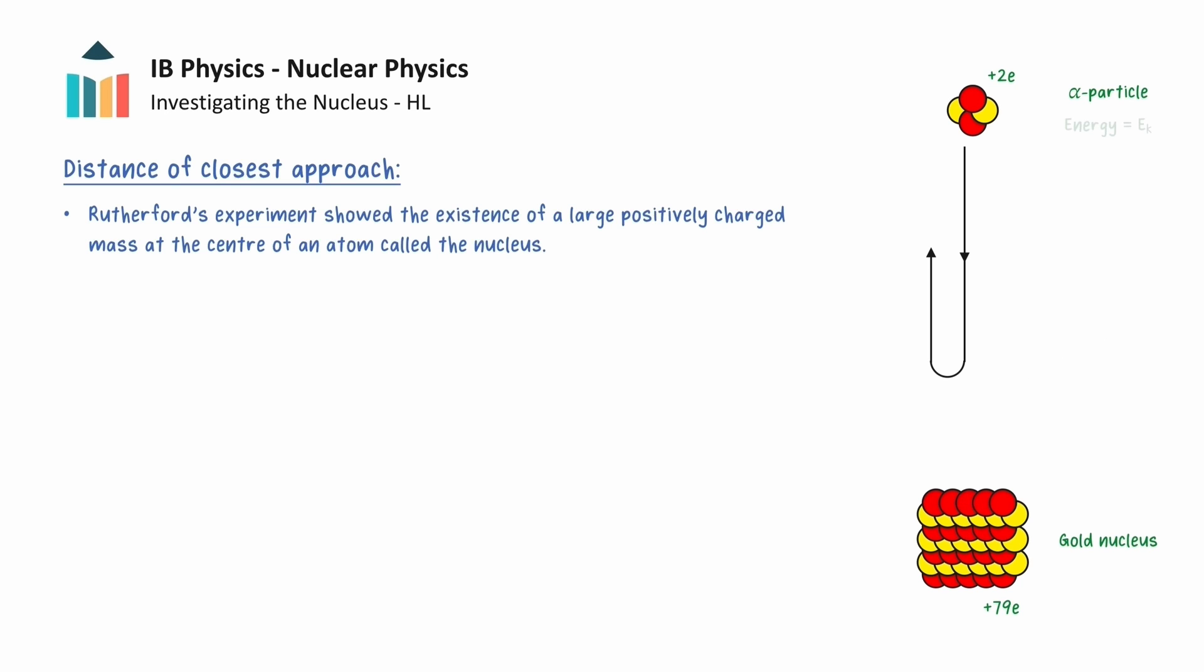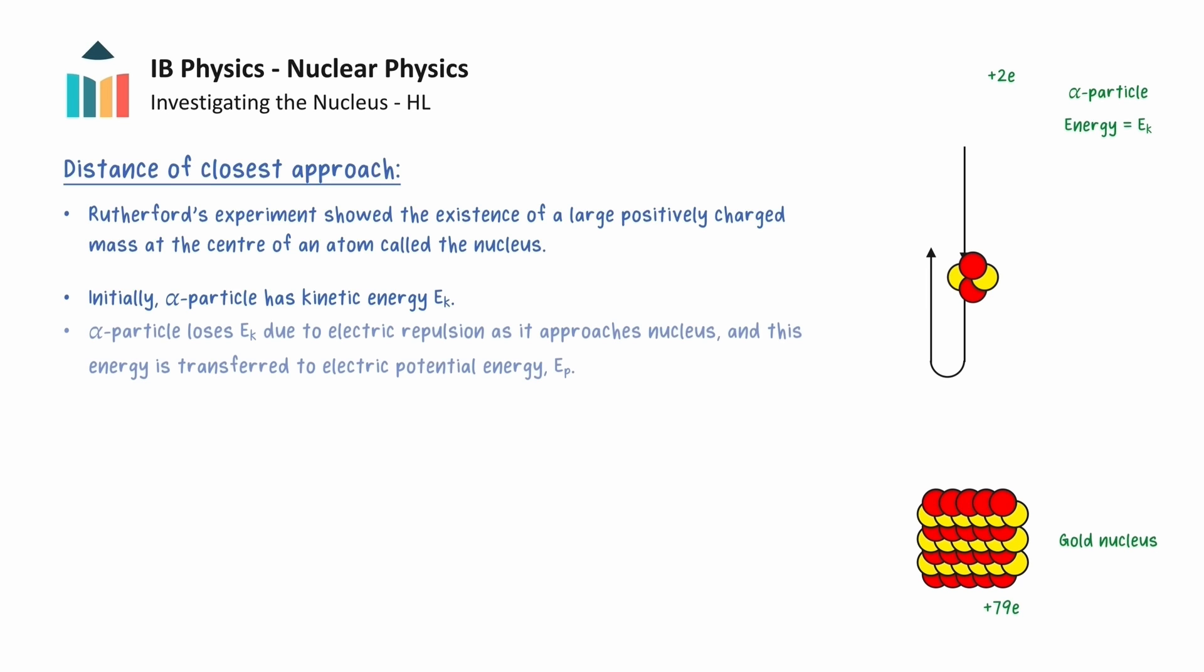We will now use energy considerations to calculate the distance of closest approach for an alpha particle that is directed head-on towards the stationary nucleus. Initially, the system's total energy consists of the alpha particle's kinetic energy. As the alpha particle approaches the positively charged nucleus, it will lose kinetic energy due to electric repulsion, and this energy will be transferred to electric potential energy.